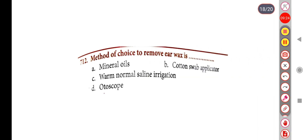Next question: Method of choice to remove ear wax is — Option A: Mineral oil, Option B: Cotton swab applicator, Option C: Warm normal saline irrigation, Option D: Otoscope. The correct answer is Option C, Warm normal saline irrigation.